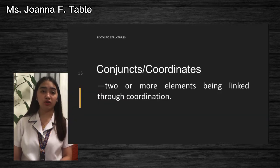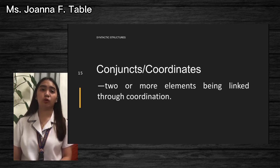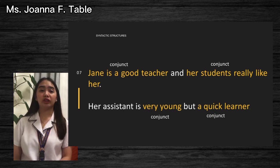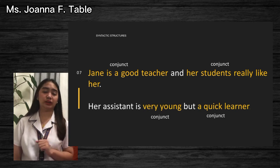As you may have noticed, I mentioned conjuncts earlier. So what are conjuncts? Conjuncts, or coordinates, are two or more elements being linked through coordination. For example: 'Jane is a good teacher, and her students really like her.' We already know that 'and' is the coordinator. Therefore, 'Jane is a good teacher' is considered a conjunct, as well as 'her students really like her.'